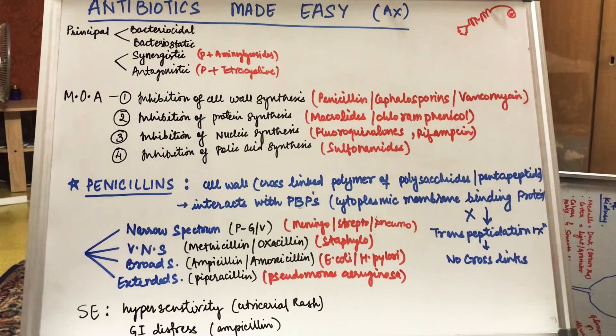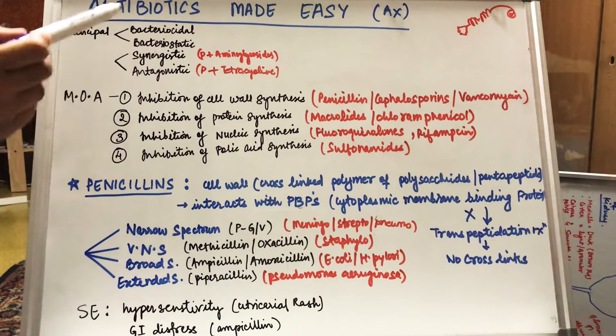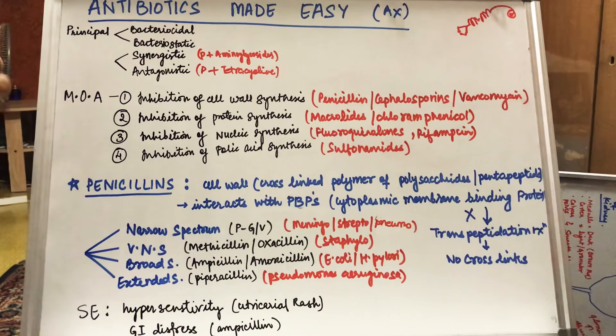Bacteriostatic will stop the reproduction of the bacteria. The third principle is synergistic. We use this term when the combined effect of two drugs is higher than the individual effect. For example, penicillin and aminoglycosides. When we use these drugs individually the effect is less, but if we combine these two drugs the desired effect will be higher.